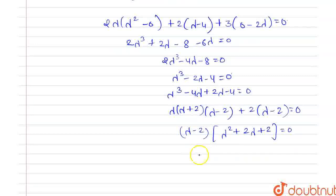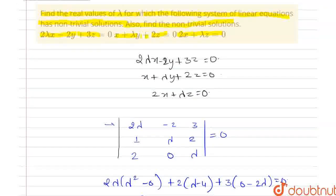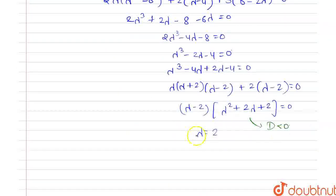The value of lambda is equal to 2. For the equation λ² + 2λ + 2 = 0, the discriminant is less than 0, which means it has imaginary roots. Since we need real values of lambda, we discard those, and so lambda = 2 is the only real solution.